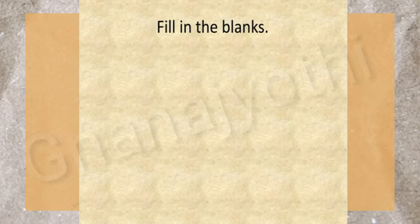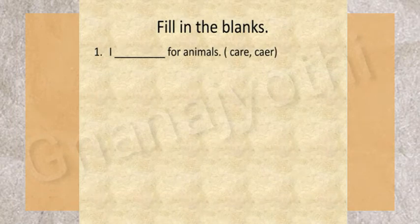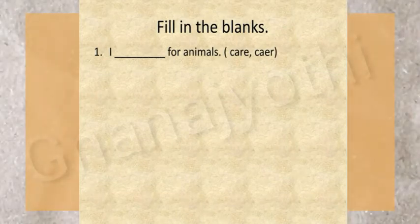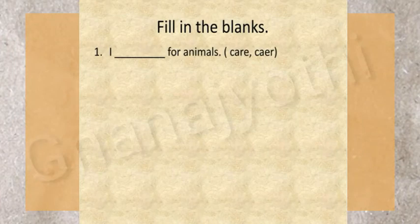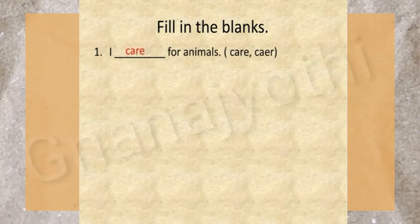First one: I ____ for animals. Students, here they have given two words in the bracket. We need to choose the word which has the correct spelling. So the answer is C-A-R-E, care. I care for animals.